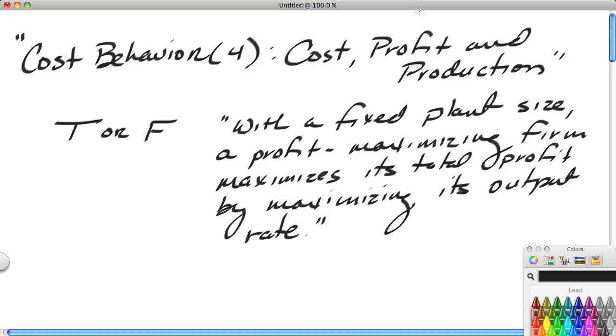Let me begin with a question, really a true-false statement. How would you answer this? Quote, with a fixed plant size, a profit-maximizing firm maximizes its total profit by maximizing its output rate. Take a moment and ponder that. The answer is...